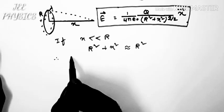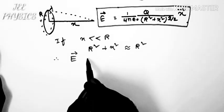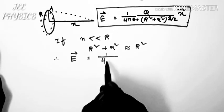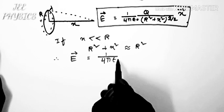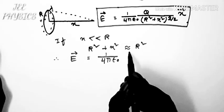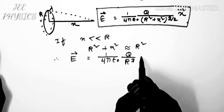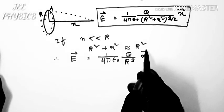In that case the field becomes E equal to 1 by 4 pi epsilon naught into q by r cube into x.